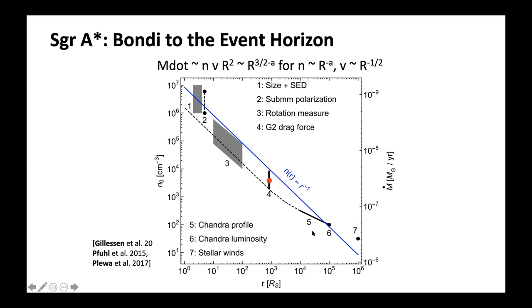Drag forces on objects like the G2 object can help us understand the inner accretion flow. We then get into horizon-scale metrics: the rotation measure, polarization, and size and SED. All of these are individual multi-wavelength probes that allow us to understand what the temperature, density, and accretion density structure looks like near the black hole.